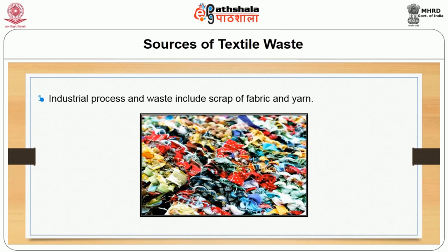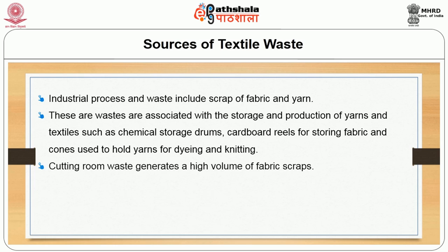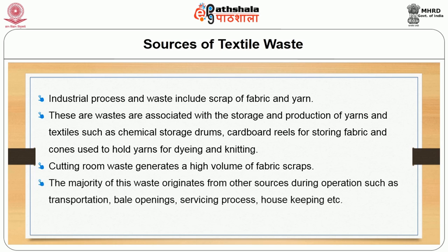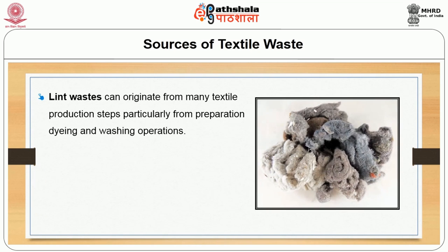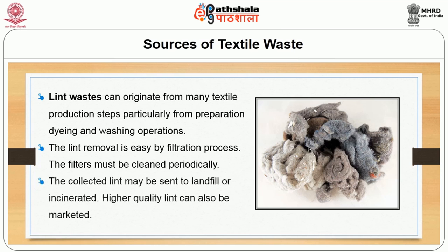Industrial processes and waste include scrap of fabric and yarn, as well as waste associated with the storage and production of yarns and textiles such as chemical storage drums, cardboard reels for storing fabric, and cones used to hold yarns for dyeing and knitting. Cutting room waste generates a high volume of fabric scraps. The majority of other waste comes from transportation, bale openings, service processes and housekeeping — these can be recycled. Lint waste can be generated from many textile production steps, particularly from preparation, dyeing and washing operations. Lint removal is easy by filtration; higher quality lint can be marketed.